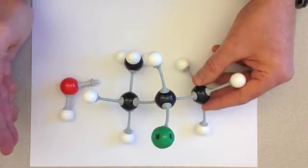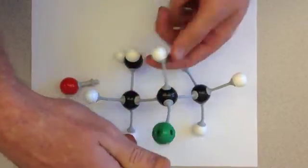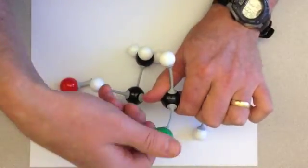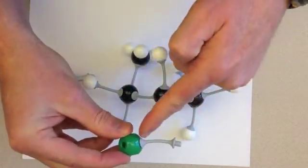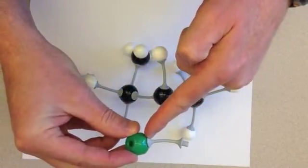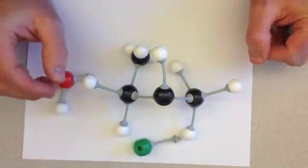And the first step is where the leaving group just leaves. So in this case, the chlorine is going to leave. It's going to take these electrons with it. And it would form the negatively charged chloride anion.